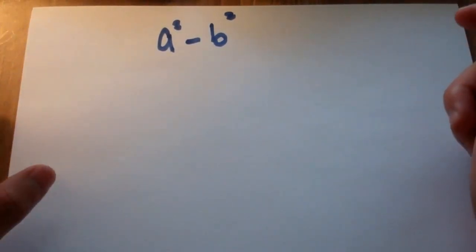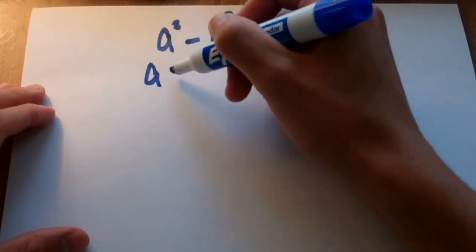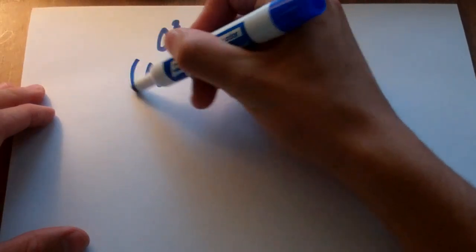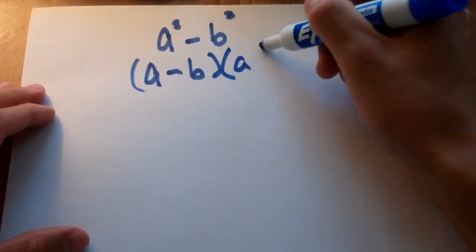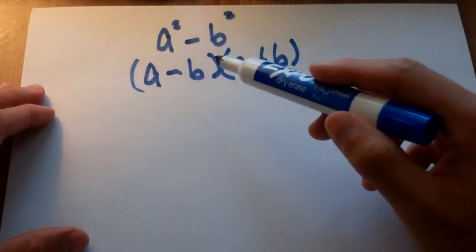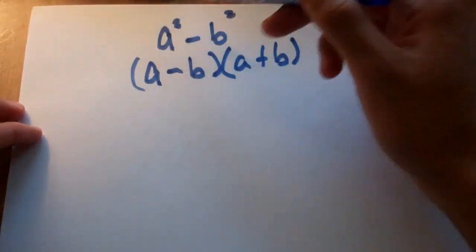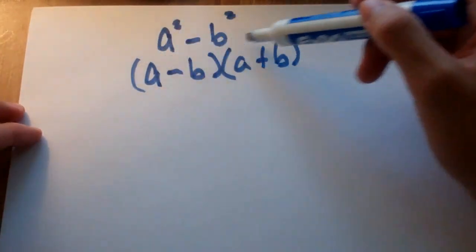Basically the difference of squares says that you can write it like this: a minus b times a plus b. What this is saying is, if we were to multiply these two together, we would get this. And if we were to factor this, we would get this.